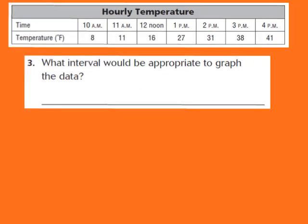Now let's look at question number 3: what interval would be appropriate to graph our data? An interval is the difference between the values on our scale, and it should always be equal. My temperature values are 8, 11, 16, 27, 31, 38, and 41. I could count by 1s, 2s, 5s, or 10s. I'm going to choose an interval of 5, so we'll count from 0 to 50 by increments of 5 to graph the data.